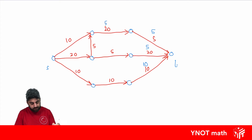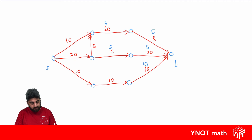We write a 5 here again — this pipe allows 20 but we can only let 5 in, so we make it 5. We can allow 10 into the next pipe because that one was 10 and the pipe before it also allows 10, so there's no problem — it can be a 10. Pushing from our source, a 10 leads into a 10, so there's no problem with that one being a 10.